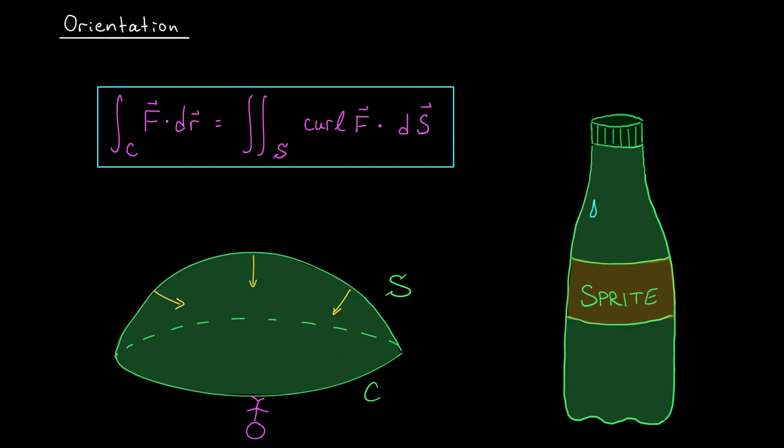So if you turn your head and you imagine what things look like from his point of view, you can imagine that he's going to have to walk in the clockwise direction. So this downward or inward orientation on our surface is giving us a clockwise or negative orientation on our curve C.